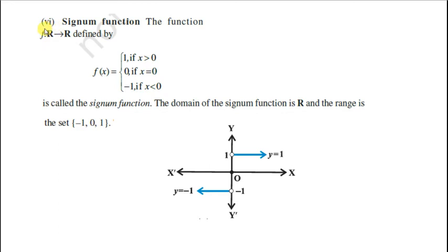And the domain is R. Toh jab graph aap draw karenge, toh positive values ke liye function ki value 1 hogi. Aur 0 pe 0 hogi. Toh isliye yahan mein blank rakha hai. 0 pe function ki value 0 hogi. Aur jitne mein negative values hain x ki, sabpar function ki value minus 1 hogi, except at 0.